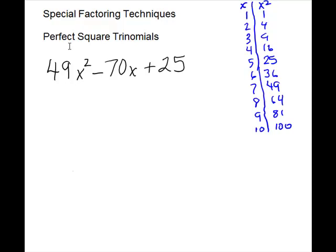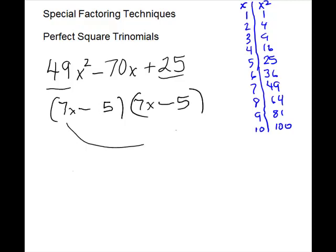I'm going to add one extra example here that was not in your template. For this problem, it's pretty obvious — that's a square at the front, and that's a square. I would certainly go to perfect square trinomial to try first. Like signs, both minus this time. Then try 7x, 7x, and 5 and 5. And then check: minus 35x, minus 35x, equals minus 70x. And that works.